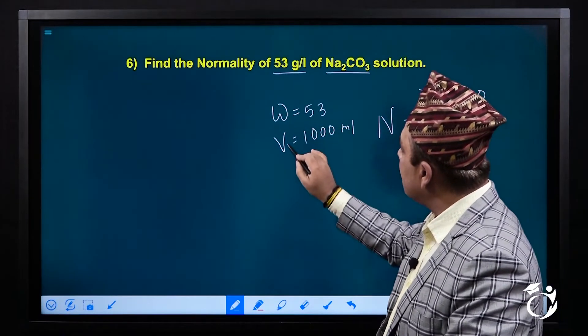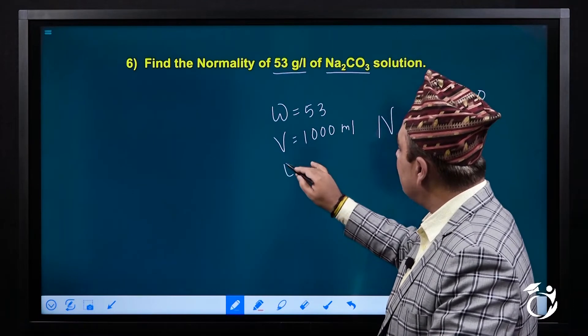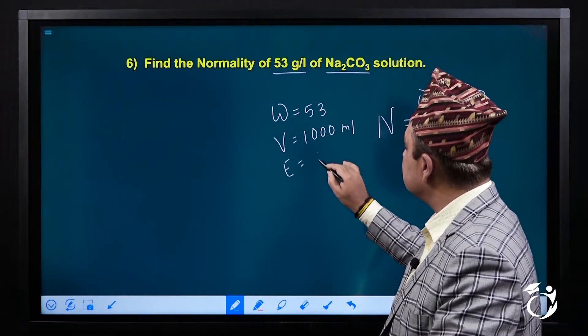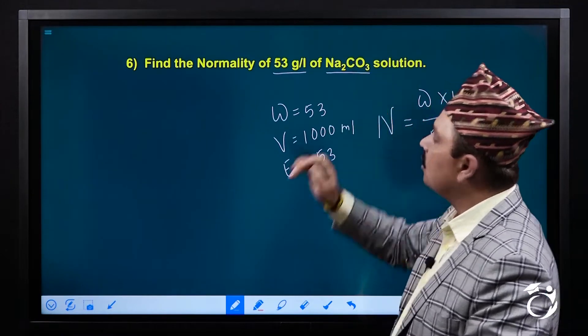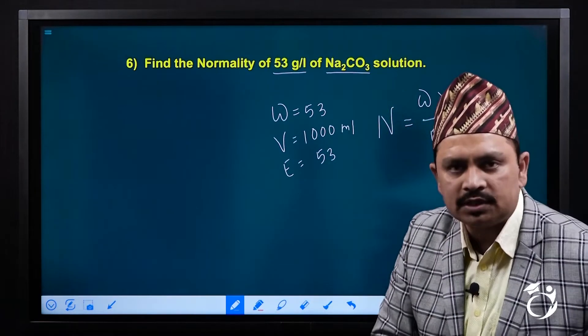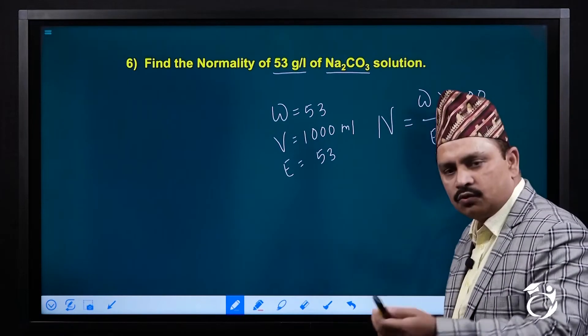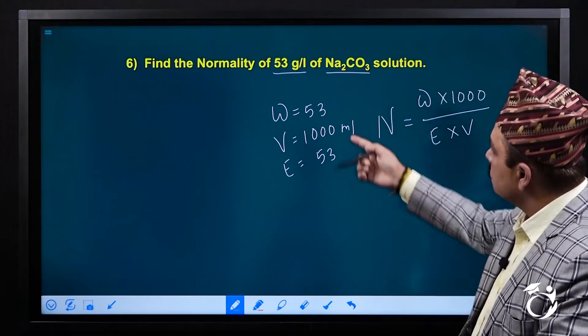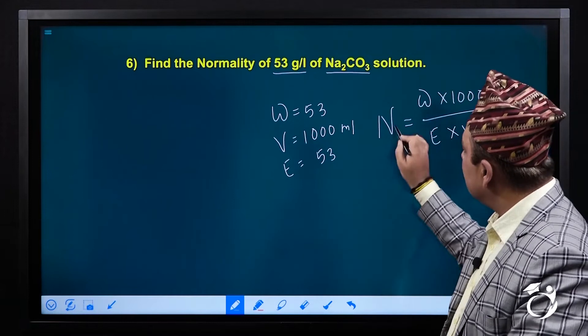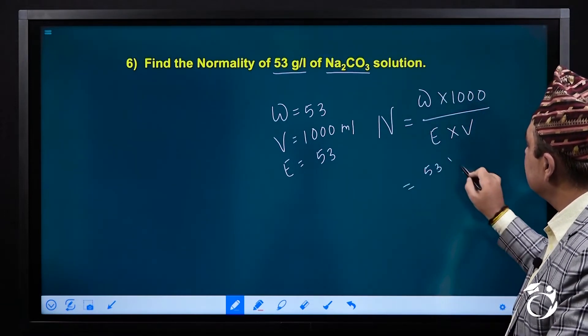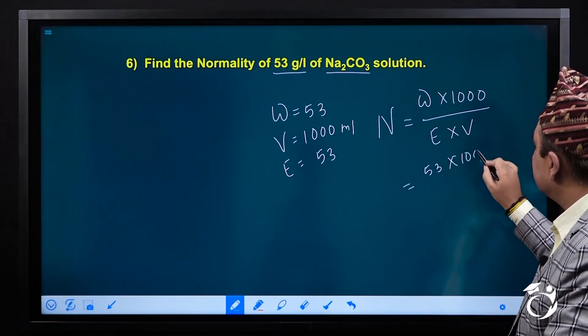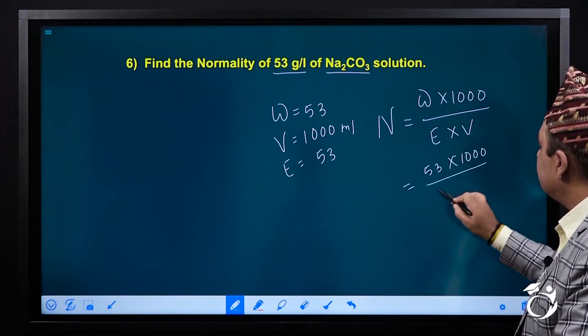So weight and volume - weight equal to 53. If we have sodium carbonate, we can take the equivalent weight. We have this amount of weight, which means 53, and this is the equivalent weight of 53.